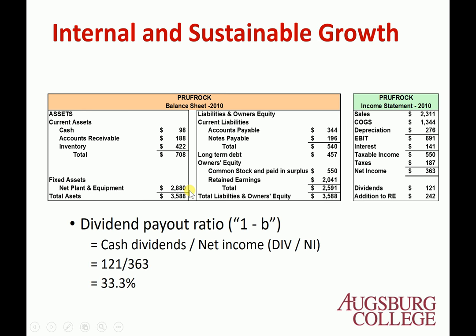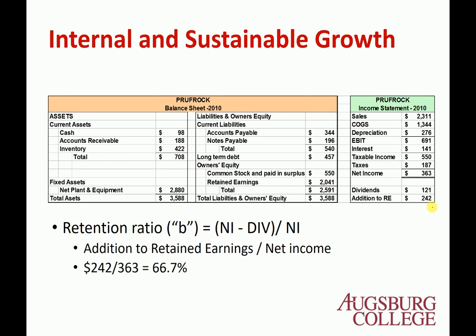The money added to retained earnings may be used as an internal source of funds. It's basically money that you can use for investment. So B is quite related to the growth rate. We compute the dividend payout ratio for this firm: cash dividend here is $121 million and net income is $363 million, so the dividend payout ratio is 33.3%. Therefore, the retention ratio is 66.7%. The sum of the retention ratio and the dividend payout ratio should be 100%, since net income may be used only two ways: dividends or adding to retained earnings.